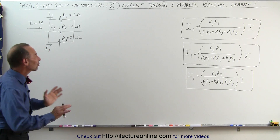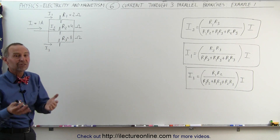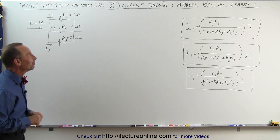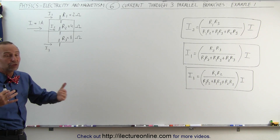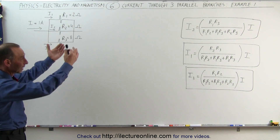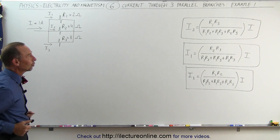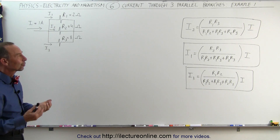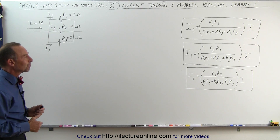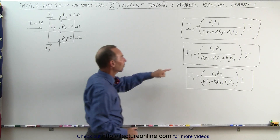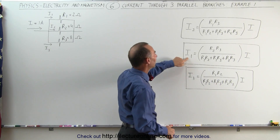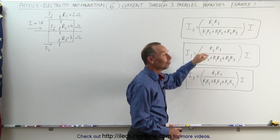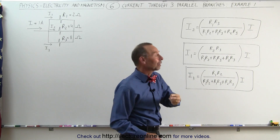We already saw those particular values in our conceptual video that we did a few videos ago, so now we're actually going to show you how to calculate it using those equations. Those are the three equations calculating the current in each of the three branches. Notice that for the top branch, in the numerator we have the product of the resistance of the other two branches.